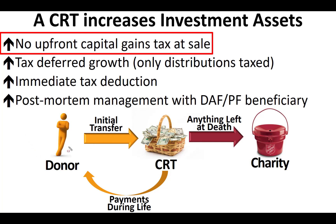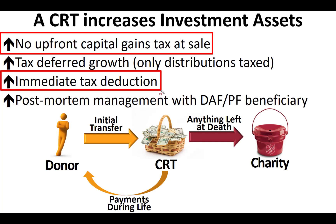So that $10 million became $6.3 million and the person has to learn how to live off $6.3 million. However, there is an alternative. They could take that $10 million asset, put it into their irrevocable charitable remainder trust, and sell it. The full $10 million stays untouched by capital gains tax, stays in the trust managed by the donor or someone they select. The donor gets payments for life off the entire $10 million — unreduced by capital gains taxes. That's a pretty good deal for the donor.